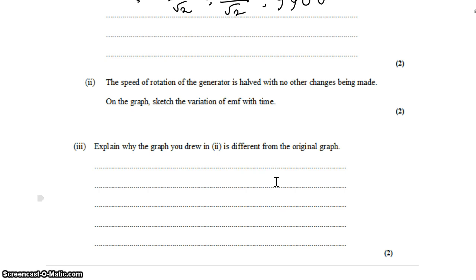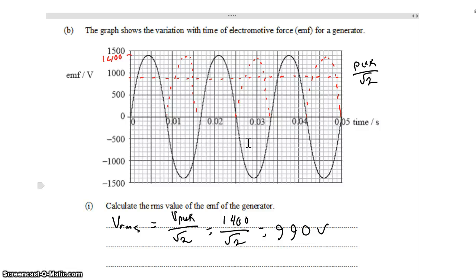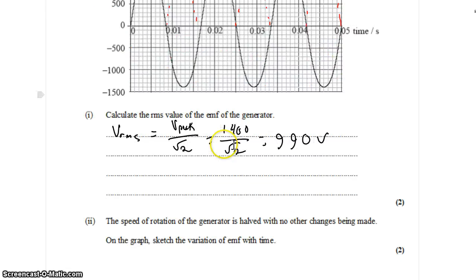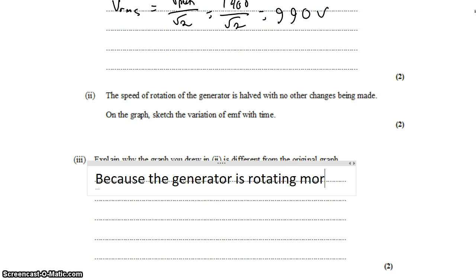What is going to change if we halve the rate of rotation of the generator? Well, one thing that's going to change is the peak EMF. The slower the electrons in the generator are moving, the less current we get, the less EMF we generate. So because the generator is rotating more slowly, the peak EMF will reduce.